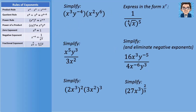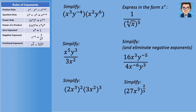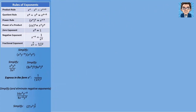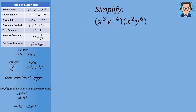Let's take a look at six sample problems. The first one asks us to simplify two things we're multiplying together. We can put the x's together — we're multiplying, so we add exponents and get x to the 5th. Then the y's: a negative 4 and a 6 gives us a positive 2.